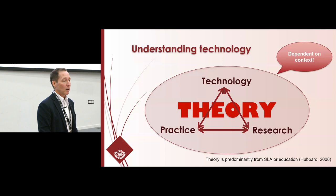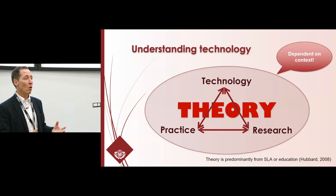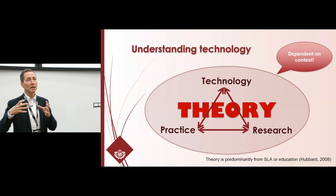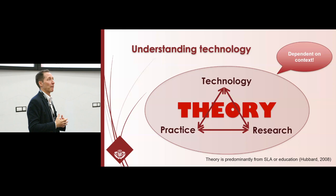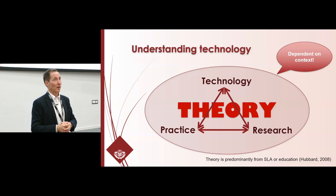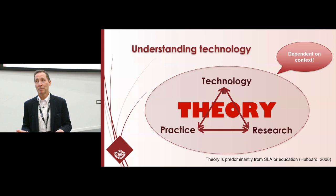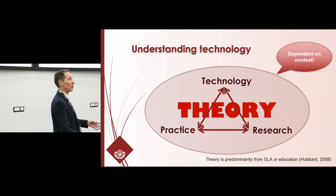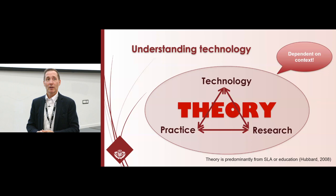We also need to remember that all of this happens in a context. How I teach with technology in Japan is naturally going to be slightly different from how I teach in the UK. A simple example: what is the most commonly used messaging app in the UK? In Japan, nobody uses it — it's unknown. If I say to my students, 'Let's use WhatsApp,' they'll say, 'What's that?' So we have these small points that we need to consider — the context will make a difference.